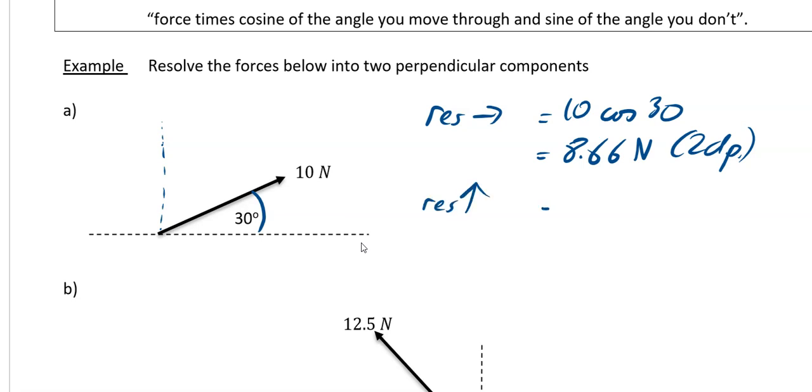Resolving vertically, I'm going to have 10. I don't have the angle, so I'm going to use sin. So 10 sin of 30. And if you do 10 sin of 30, that's a nice one that comes out as 5 newtons.